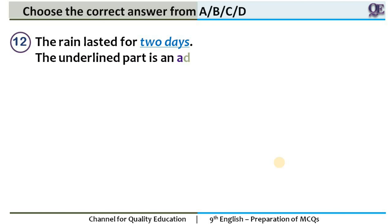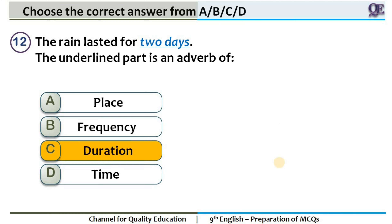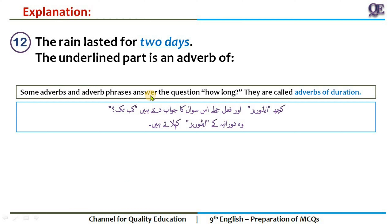Question 12: 'The rain lasted for two days.' This can also be confusing. The answer is adverb of duration. You might mistakenly choose time or frequency, but this shows duration. Some adverbs and adverb phrases answer the question 'how long' — they are called adverbs of duration. When the question is 'how long,' that is duration. If it is 'how many times,' that is frequency. But if it is 'how long,' that is duration. 'Two days' — the rain continued for two days continuously. Pay careful attention to the specific adverb being used.